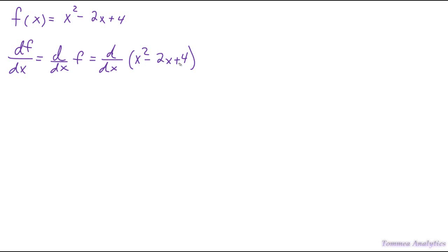We operate on this function by doing various rules such as power rules and constant multiple rules. Now x² - 2x + 4 is actually just a string of different functions. x² is a function by itself, the -2x is a function by itself, and the 4 is a function by itself.